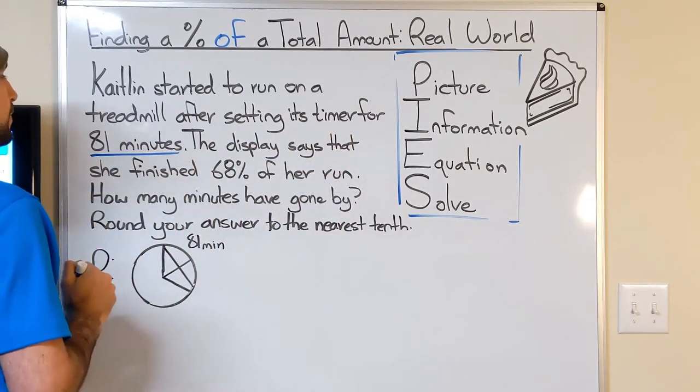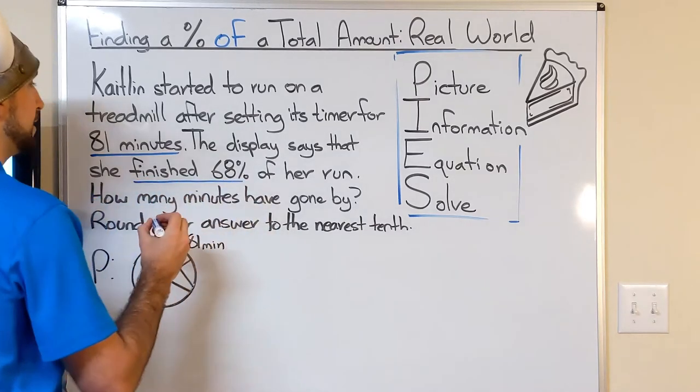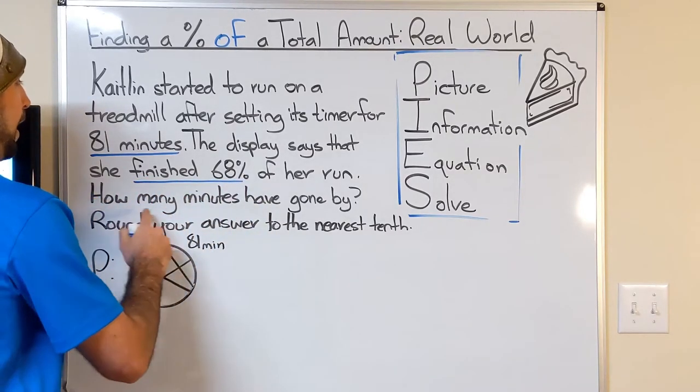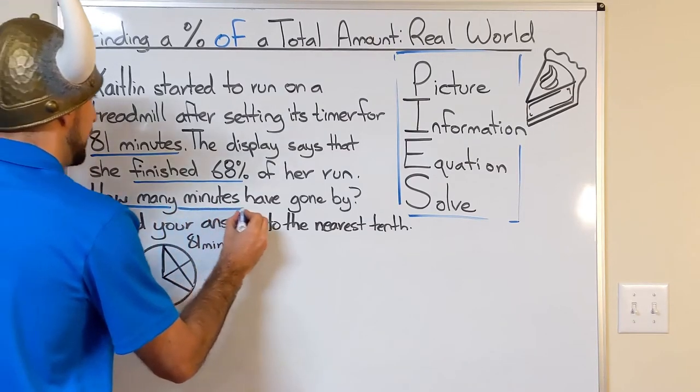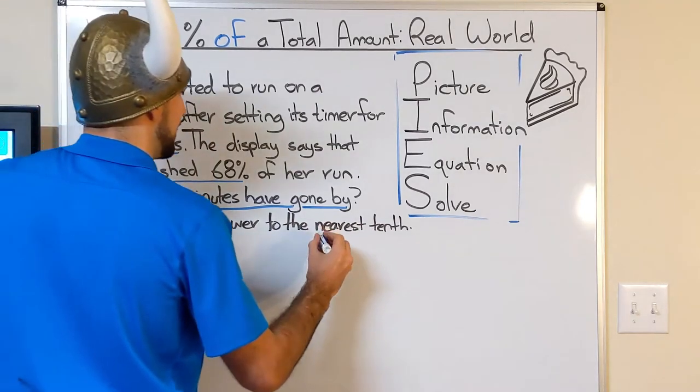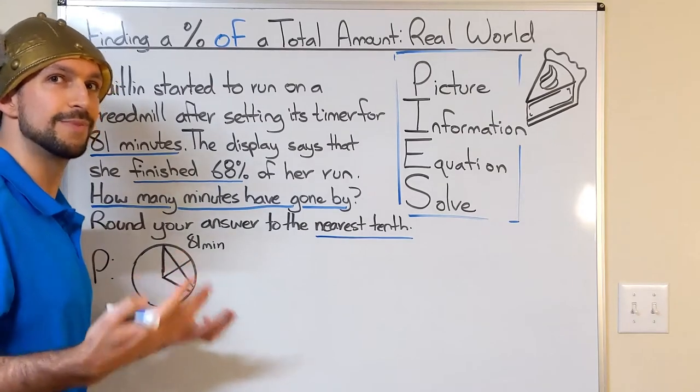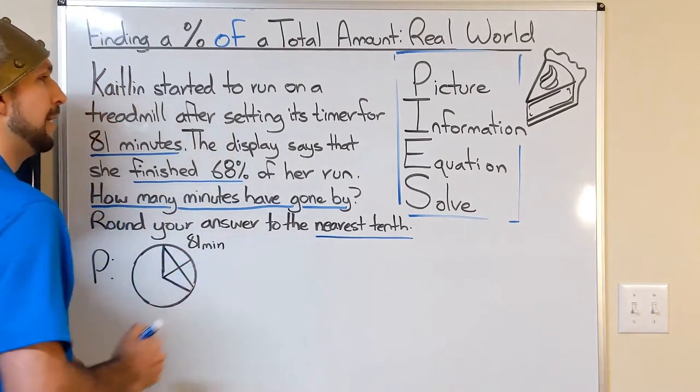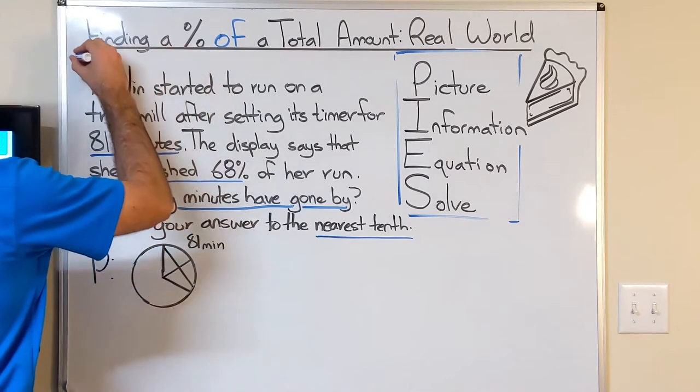The display says that she finished 68% of her run. How many minutes, so here's what it's asking us. How many minutes have gone by? Round your answer to the nearest tenth. This is also really important because we can do all the math right and submit the wrong answer because we didn't round to the nearest tenth. So that was my information, my I.